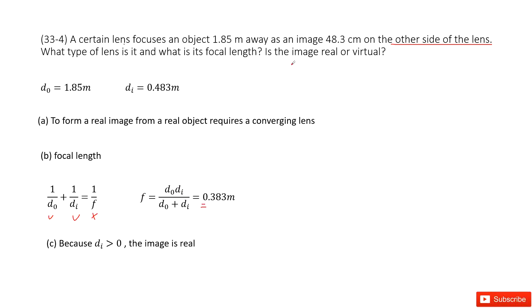The next part asks if the image is real or virtual. As we talked about, because this image is on the other side of the lens and d_i is larger than zero, the image is real. This is a convergent lens. Thank you.